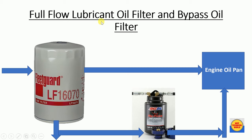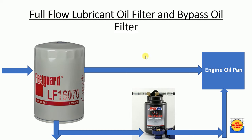Next are the full flow lubricant oil filter and bypass oil filter. The full flow oil filter removes impurities from the lube oil and supplies clean oil to the engine, maintaining frictionless engine parts. If the full flow filter is clogged, the bypass valve opens and lube oil is diverted to the bypass filter and supplied to the engine oil pan, preventing engine overheating and seizure.